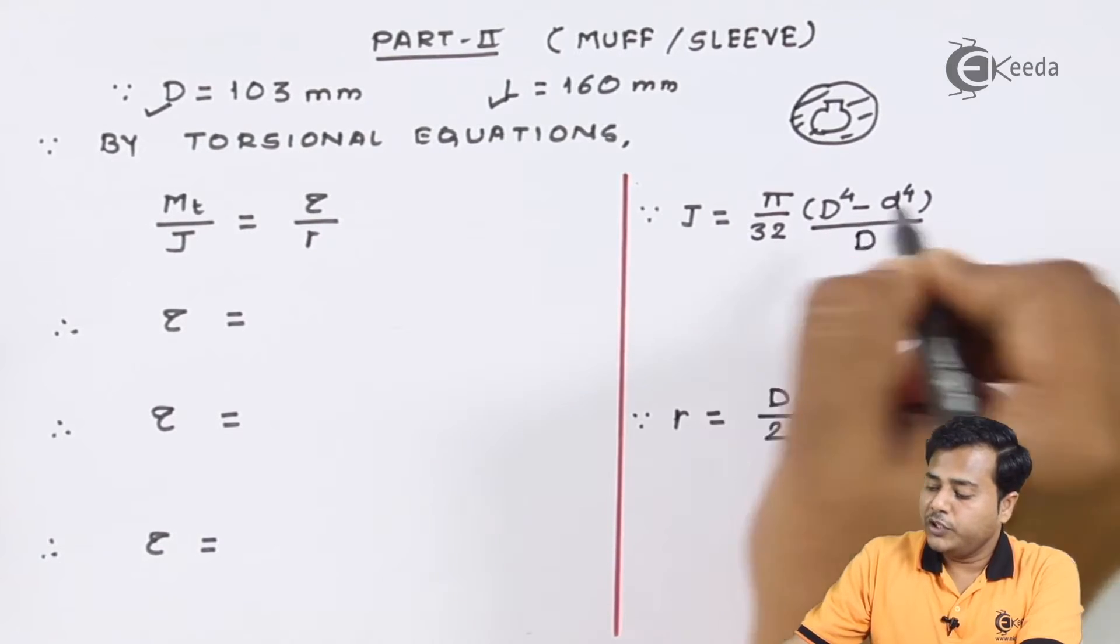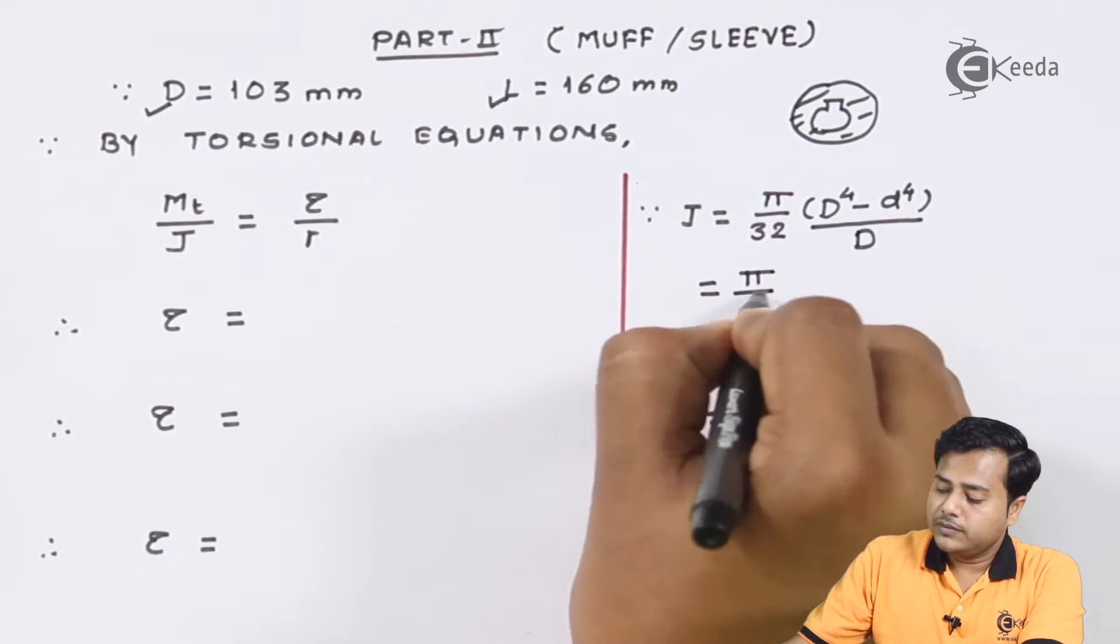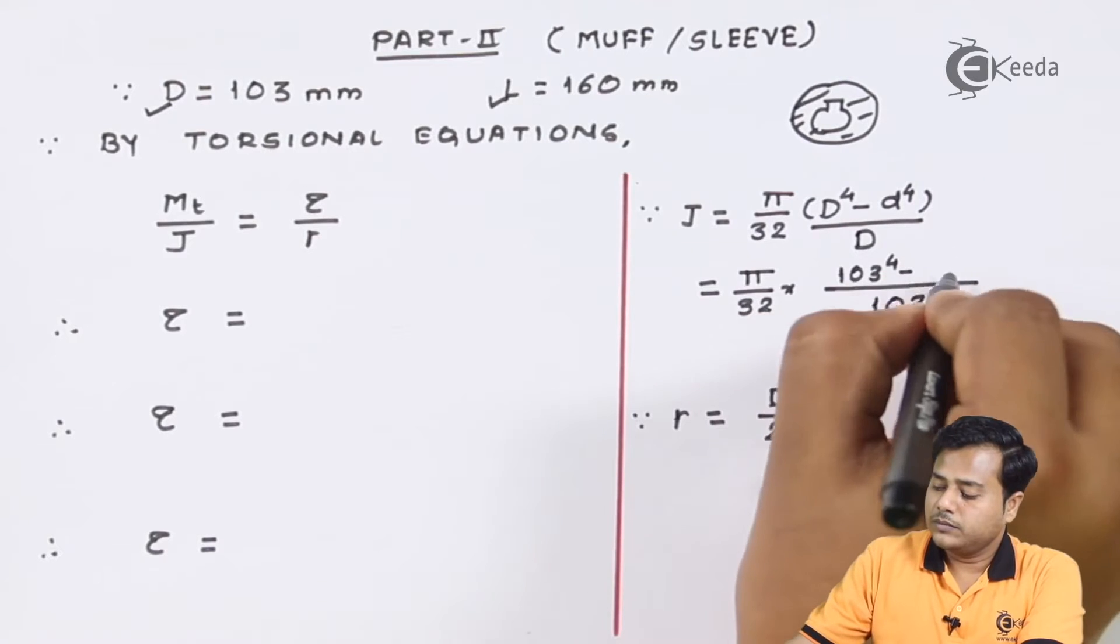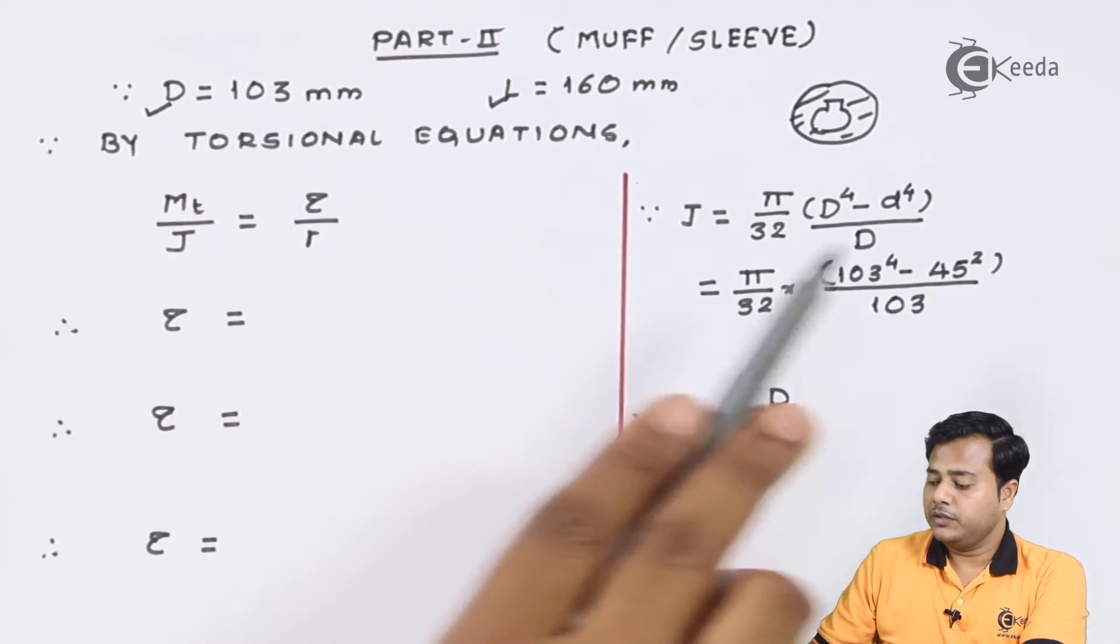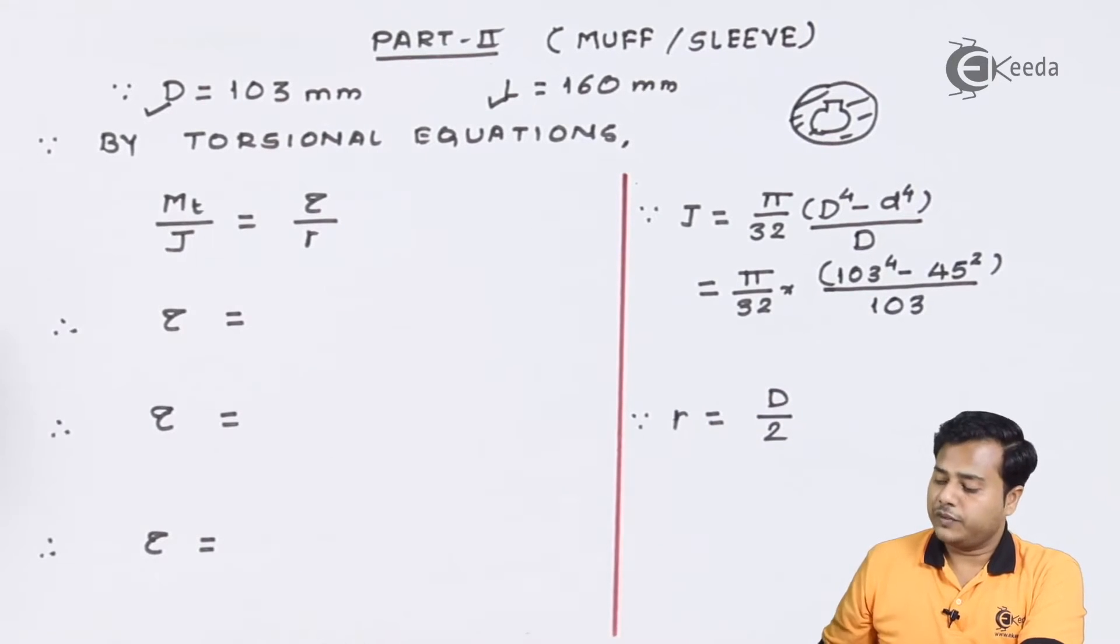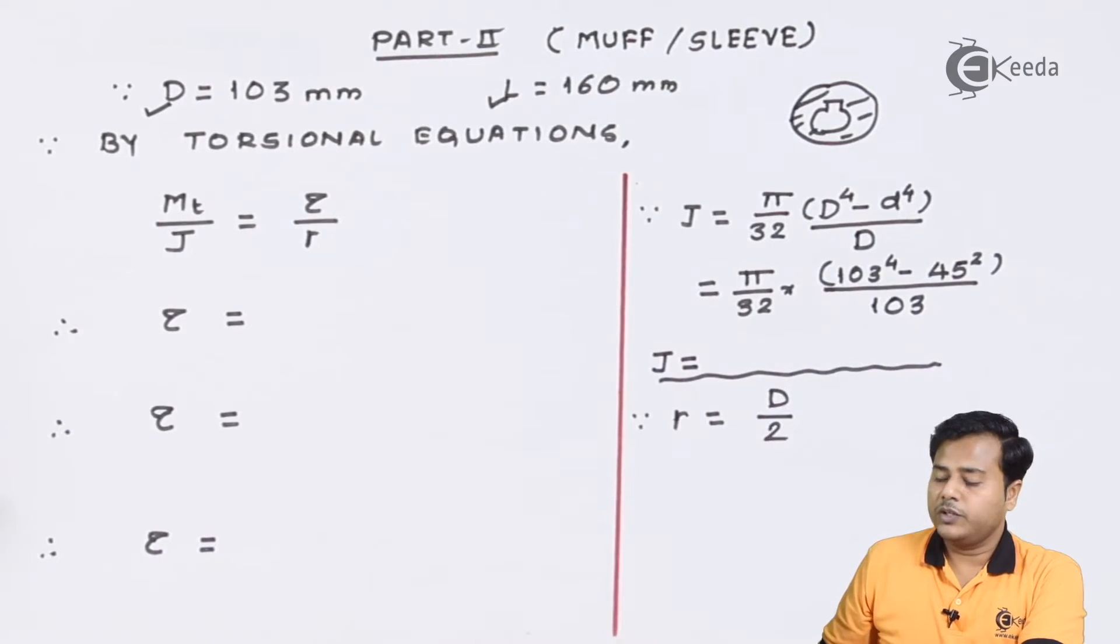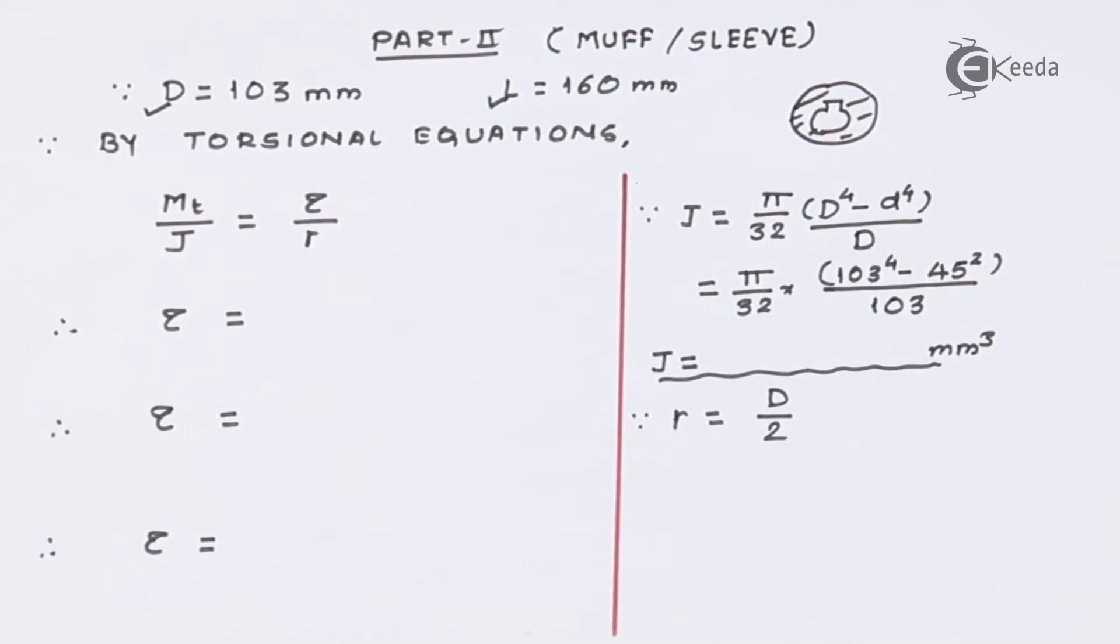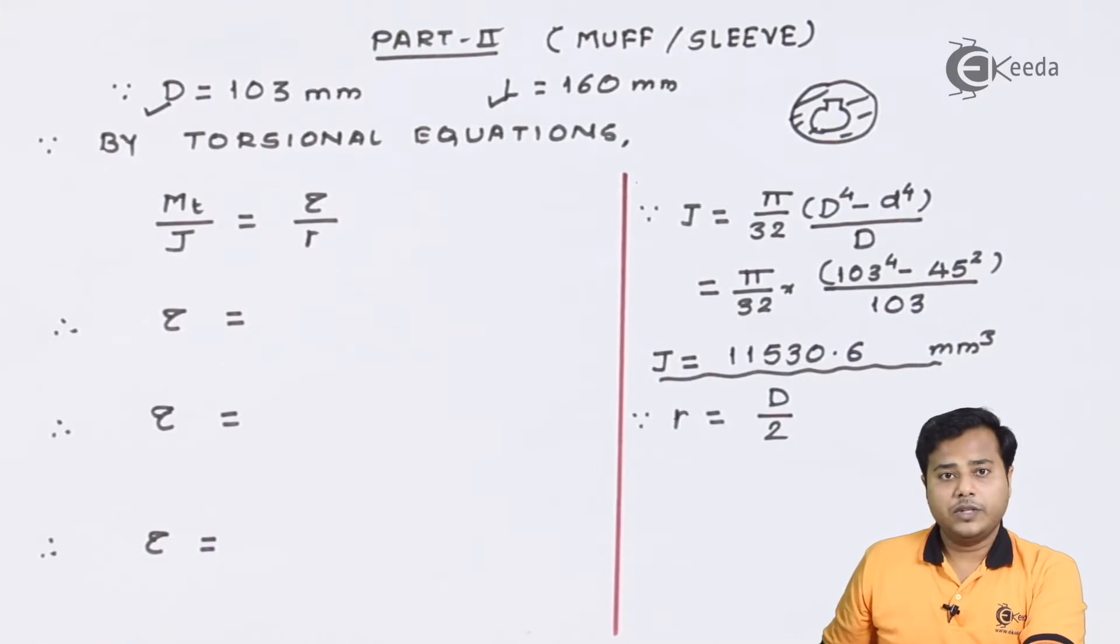Let me mention diameter d also here. When I substitute the values where 103 is the MUF diameter and 45 is the diameter of shaft, after solving this expression we get the value of J somewhere equal to, of course it is in terms of millimeter cube, somewhere around this value.